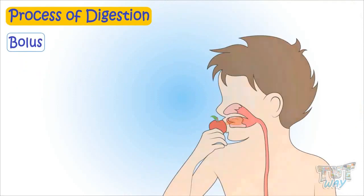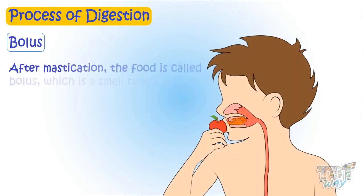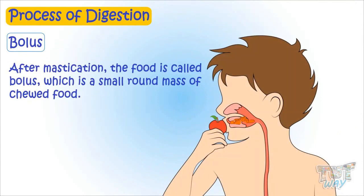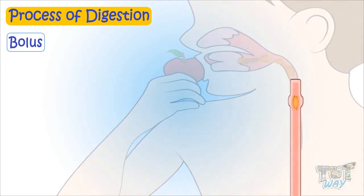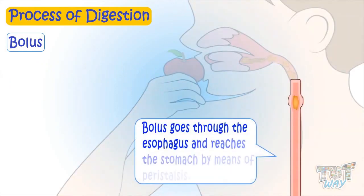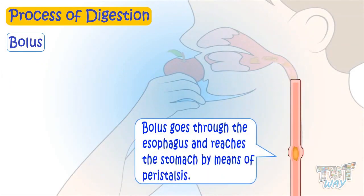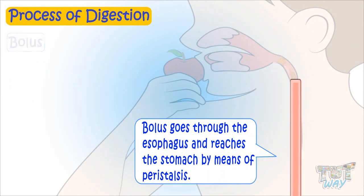After mastication, the food is called bolus, which is a small round mass of chewed food. The bolus goes through the esophagus and reaches the stomach by means of peristalsis.